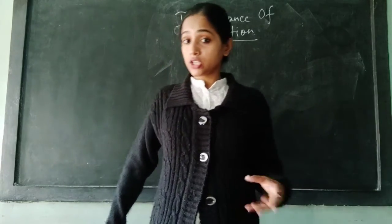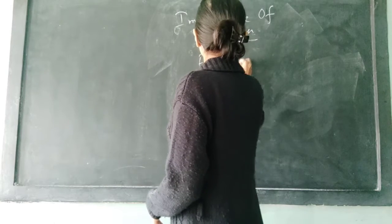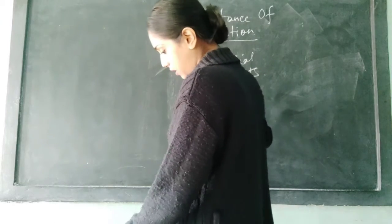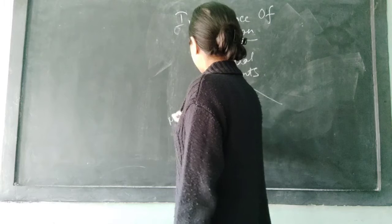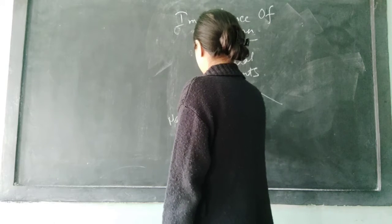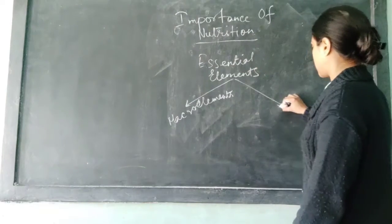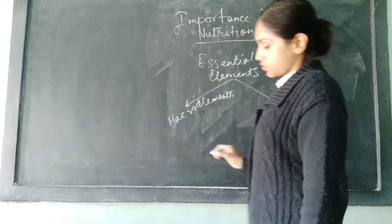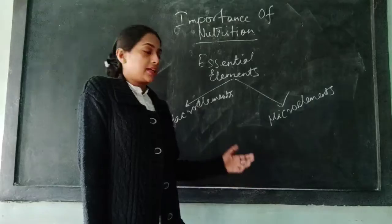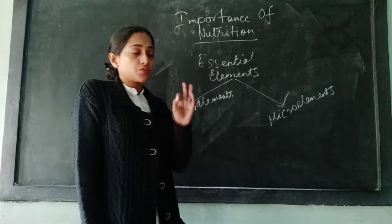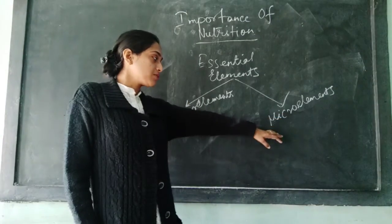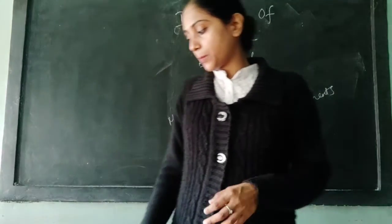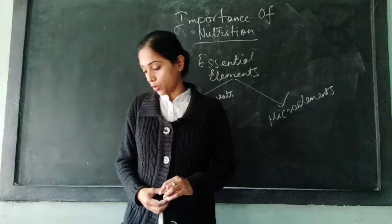Essential elements are of two types. The essential elements which are required in large amounts are called macro elements — macro means large. And the essential elements which are required in small amounts are termed micro elements, or trace elements. These elements help in the proper growth or proper functioning of the plant body.